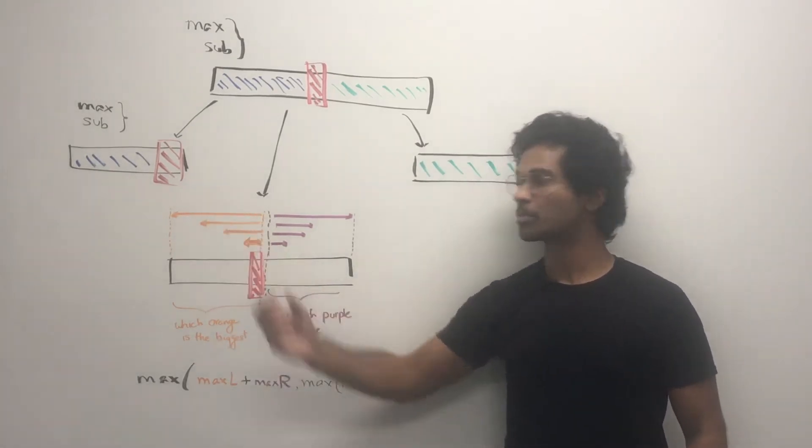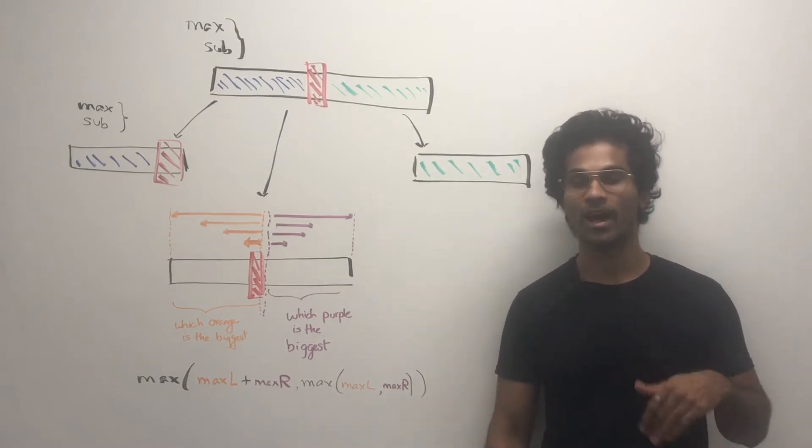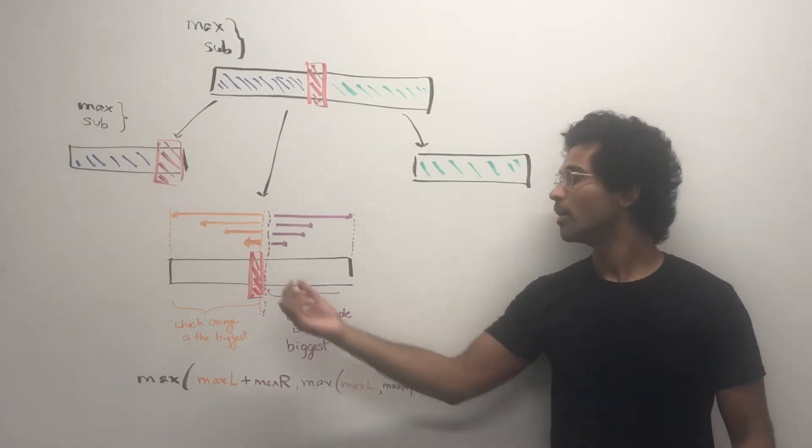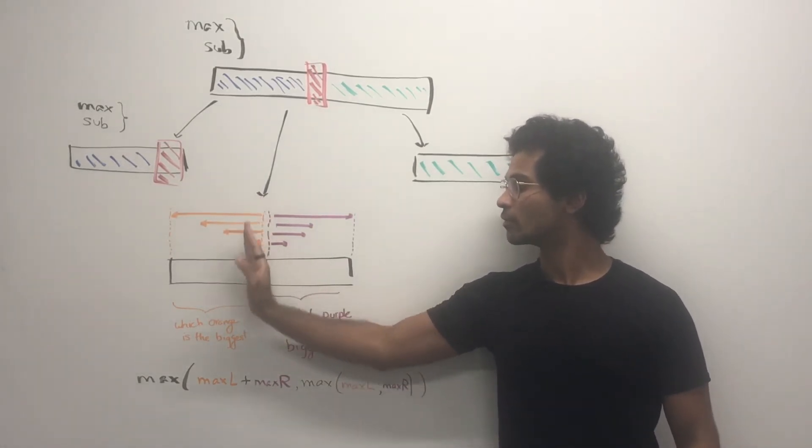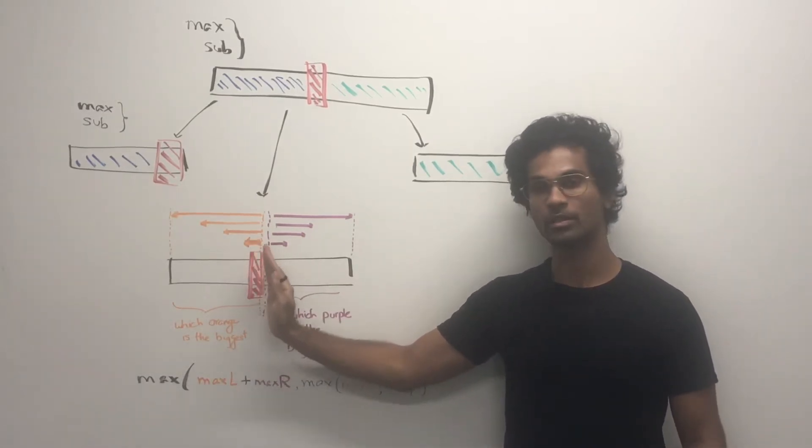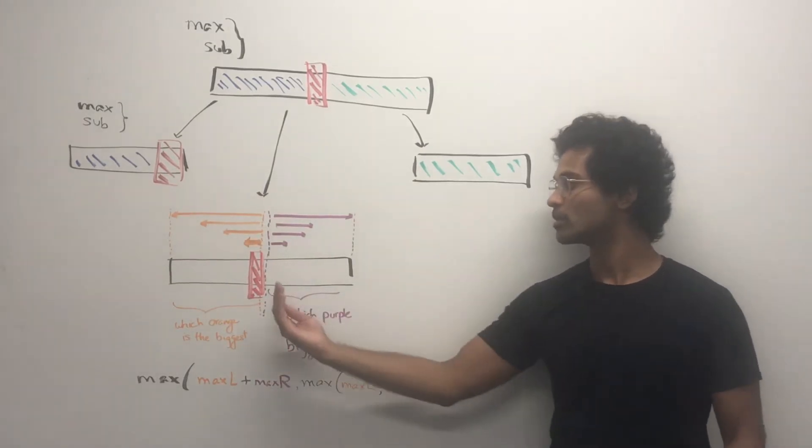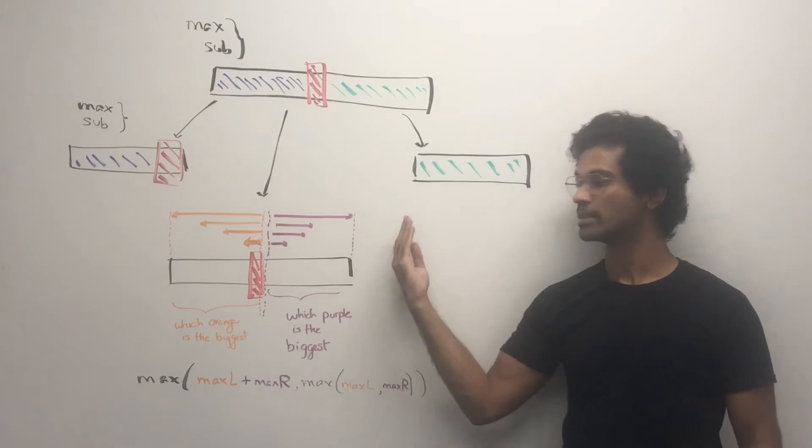So each one of these bars represents a for loop, which is going to represent a calculation by the for loop, of the subarray starting from this midpoint. So the left side is going to be a for loop, which includes the midpoint and everything on the left, whereas the for loop on the right is going to be after the midpoint all the way to the end.